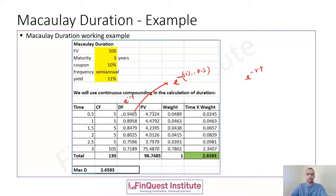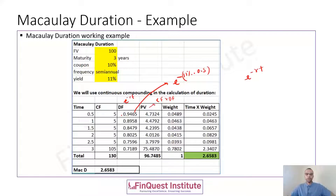These discount factors are used for present-valuing all cash flows — simple time value of money calculations. The present value (PV) is simply the product of the cash flow (CF) and the discount factor (DF). Summing all present values gives us the bond price, following the definition that bond price equals the summation of present values of future cash flows — which comes out to 96.74.